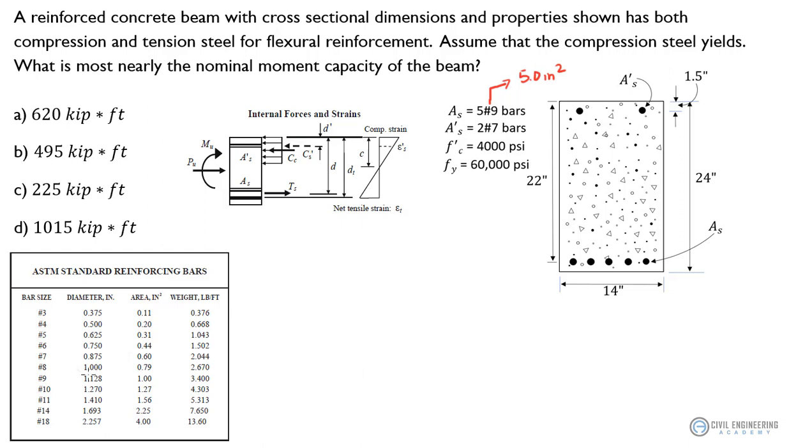And then our two number seven bars, if we look down here, each number seven is worth 0.6. So if we've got two of those, this is going to give us 1.2 inches squared of steel. So we figured out our area of steel for compression and tension faces.